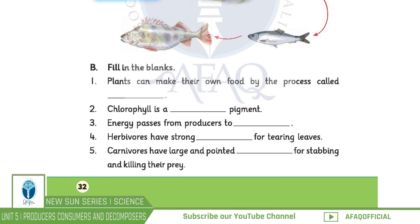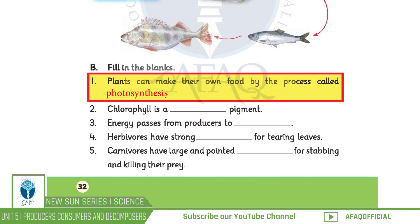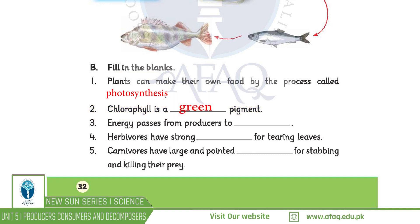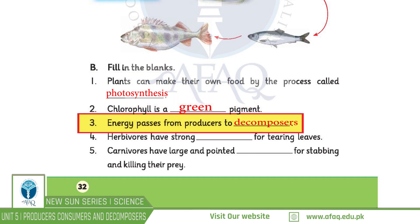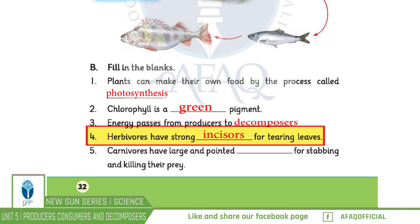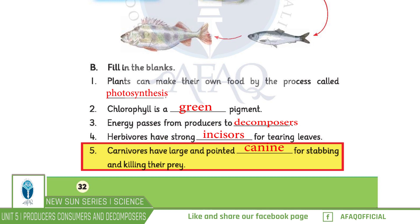Fill in the blanks. Number 1: Photosynthesis. Number 2: Green. Number 3: Decomposers. Number 4: Caesars. Number 5: Canine.